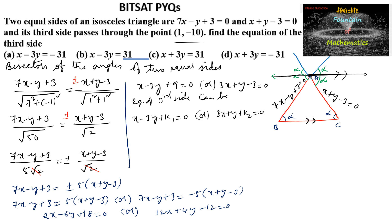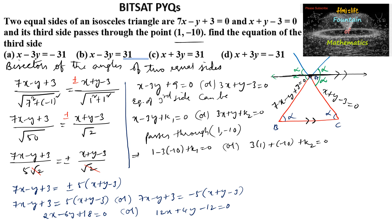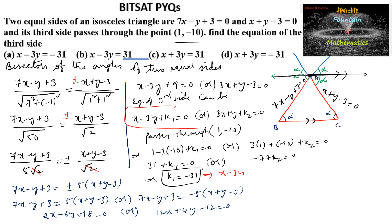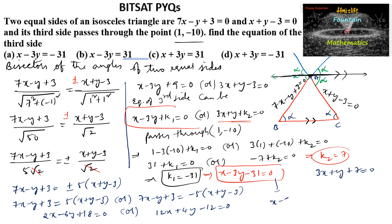Since our line is passing through the point (1, minus 10): substituting gives 1 minus 3 times minus 10 plus k1 equals 0, so 1 plus 30 plus k1 equals 0, giving k1 equals minus 31. Also, 3 times 1 plus minus 10 plus k2 equals 0, so 3 minus 10 plus k2 equals 0, giving k2 equals 7. So the equations are x minus 3y minus 31 equals 0, and 3x plus y plus 7 equals 0.